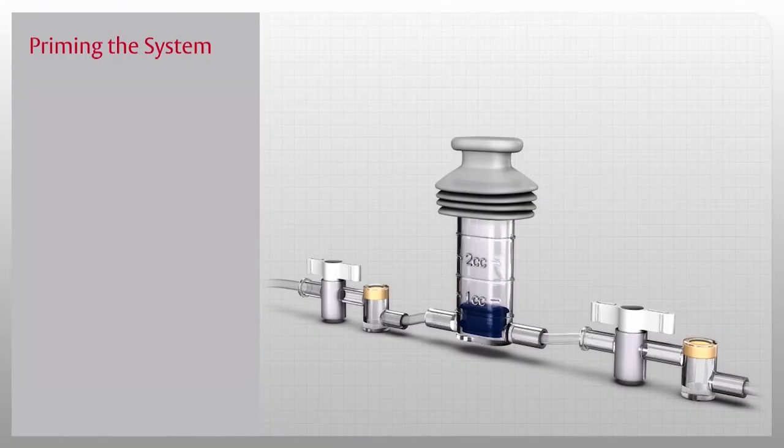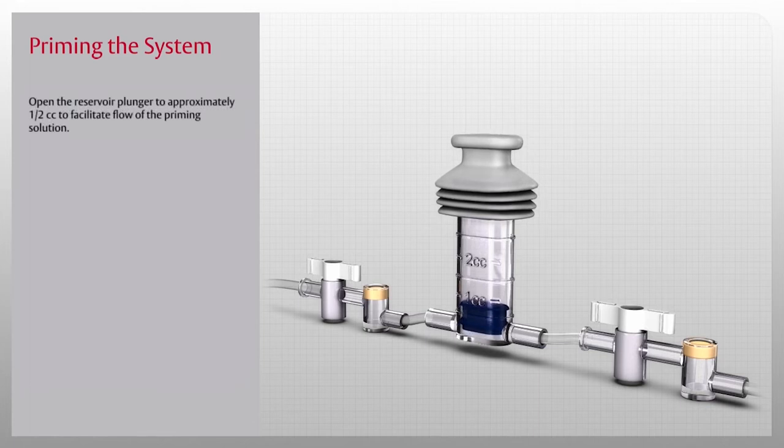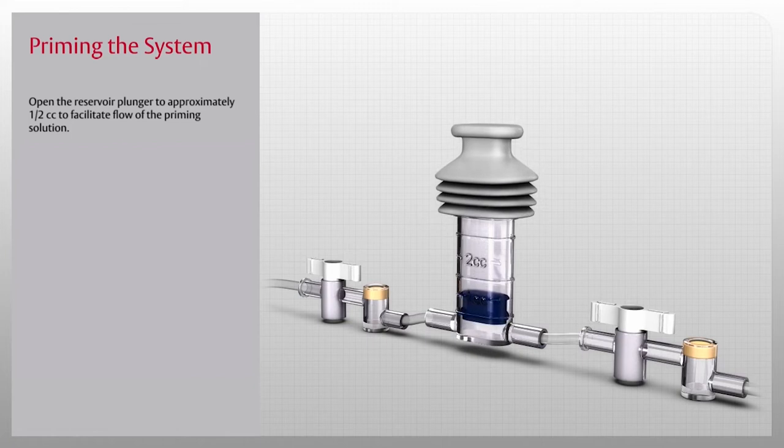Now that you have set up the Vamp Junior system, let's learn how to prime the system. First, open the reservoir plunger to approximately one-half cc to facilitate flow of the priming solution.